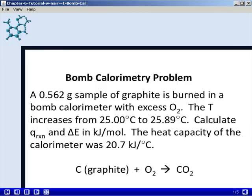In this bomb calorimetry problem, a sample of graphite weighing 0.562 grams is burned in a bomb calorimeter with excess oxygen. The temperature increases as indicated in the problem, and we're asked to calculate both Q for the reaction and ΔE for the reaction in kilojoules per mole. We're also given the heat capacity of the calorimeter as 20.7 kilojoules per degree Celsius and a balanced equation for the reaction.